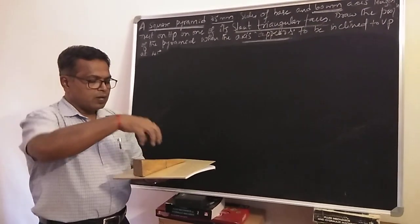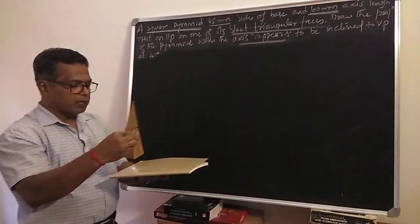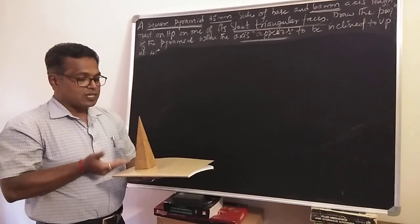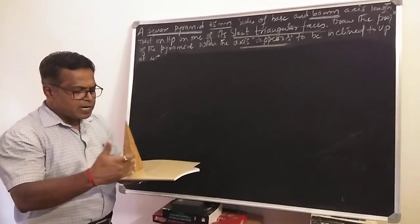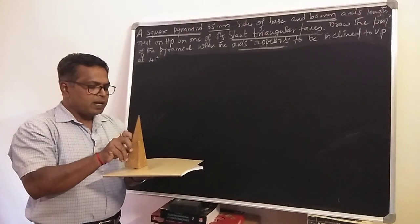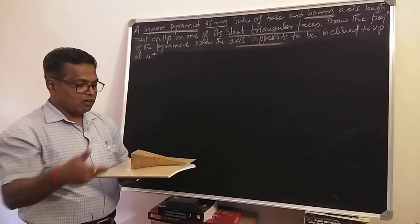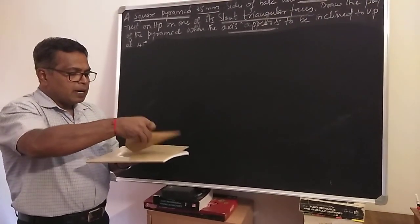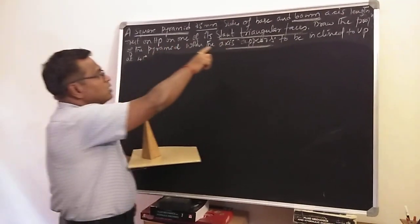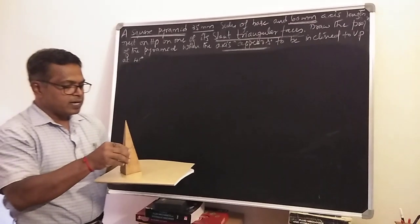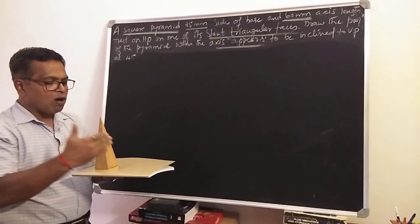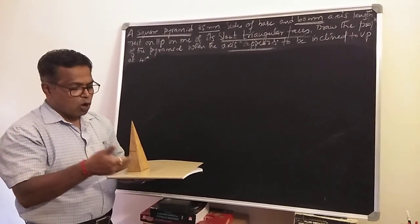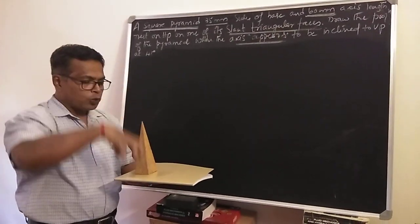We can solve such problems using the change of position method. Initially, we assume the pyramid is resting on HP on its base in the side position. The reason for placing it in the side position is so that in the next step, one of its slant faces rests on HP. Project the top view and front view in this initial position.